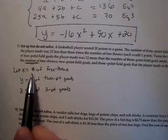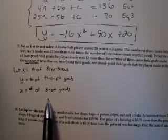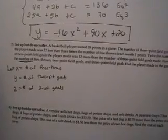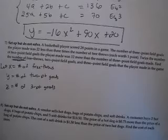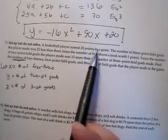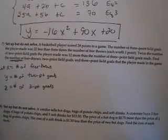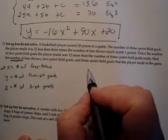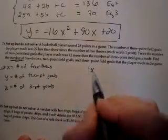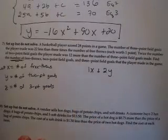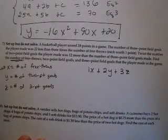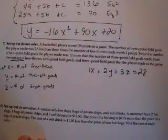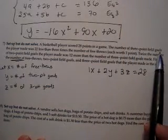What was important here was that we said we're looking for the number of each type of basket, not their point values — because that's going to come into play in a moment. Now I'm going to write my three equations. A basketball player scored 28 points: one point for every free throw, plus two points for every two-point field goal, plus three points for every three-point field goal, all adds up to 28 points.